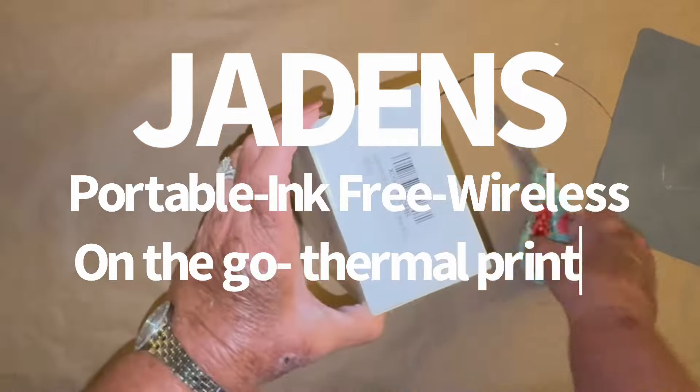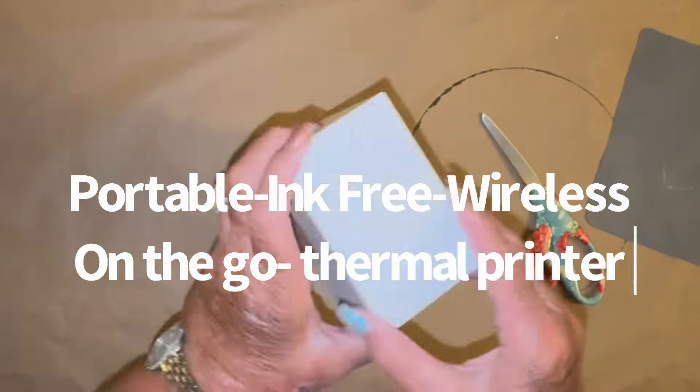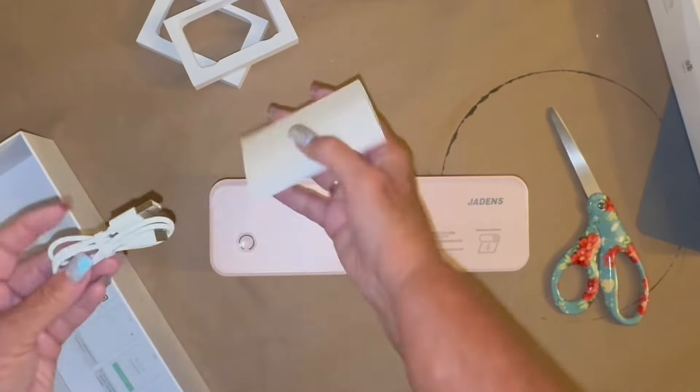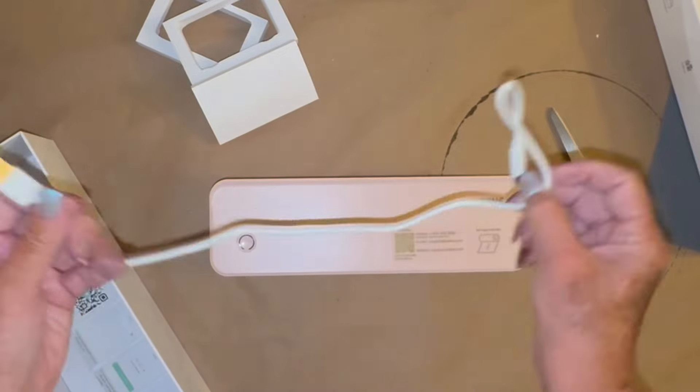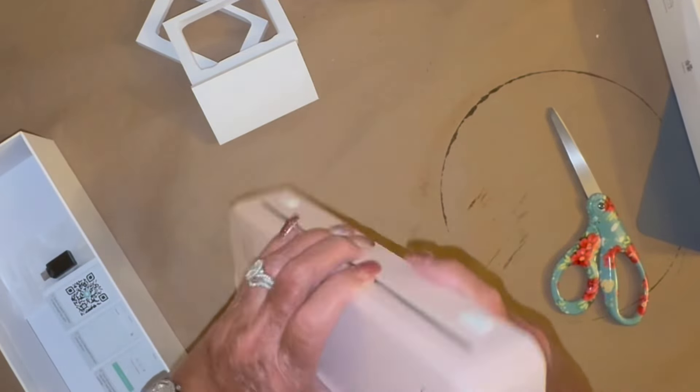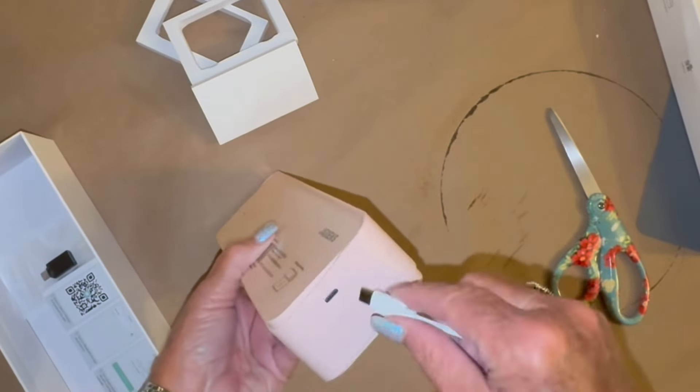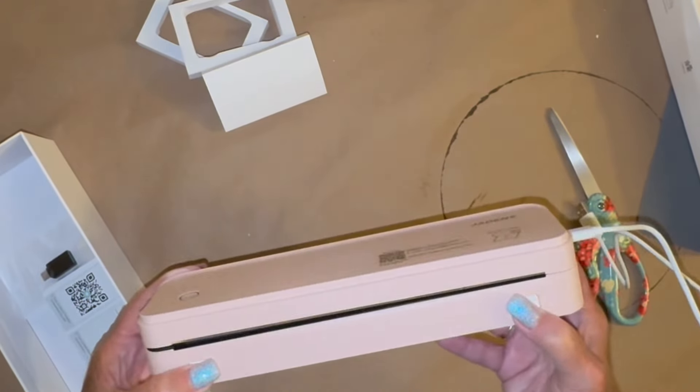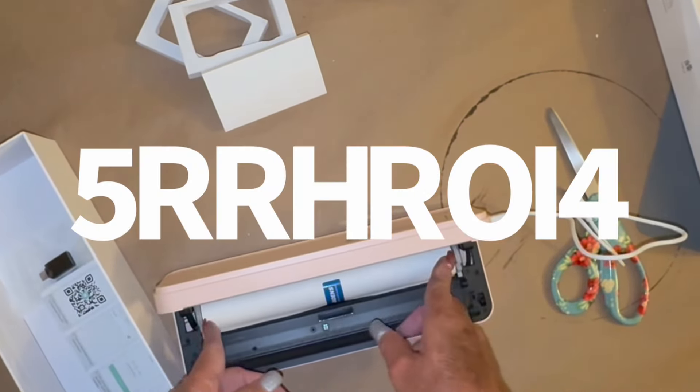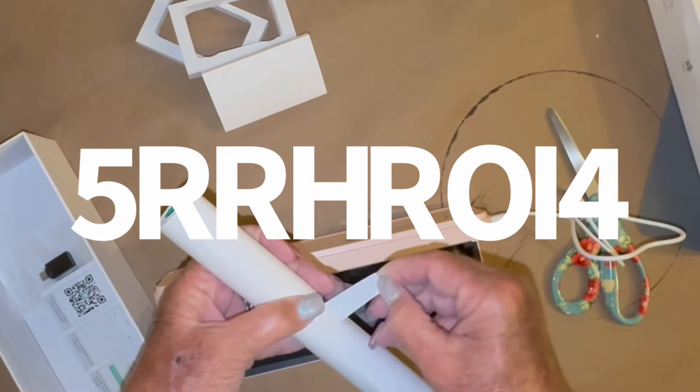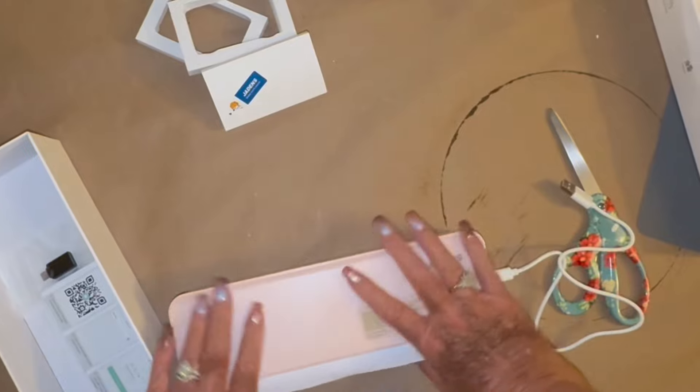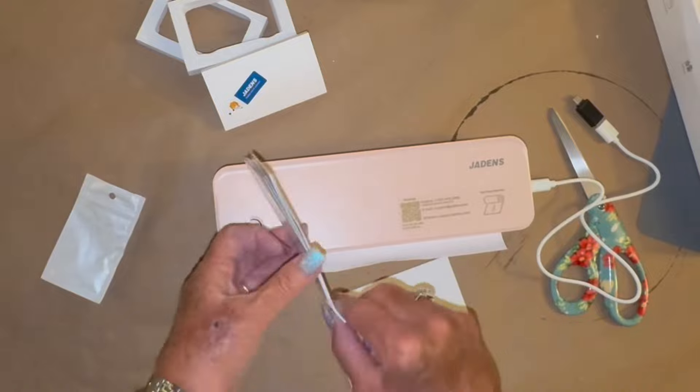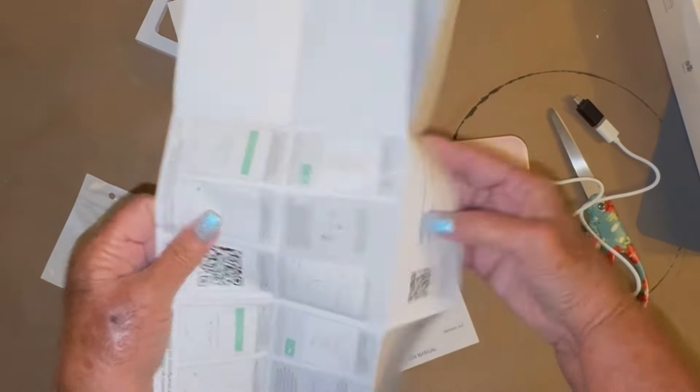But now let me show you this little Jaden's printer. Jaden sent me this printer and I have never in my life seen anything like this. It is wireless. It is ink free. Never in my life did I think there would be a printer that is ink free. But it's a thermal printer and it does it from heat somehow. I don't know how it works but it's amazing. Anyway it comes with a roll of paper. Easiest thing in the world to put together. I just took that little piece off, laid it down and shut it. That was it y'all.